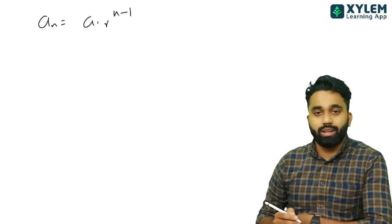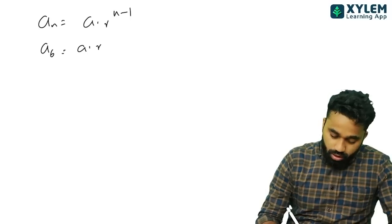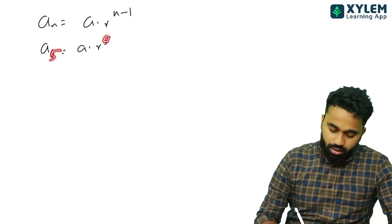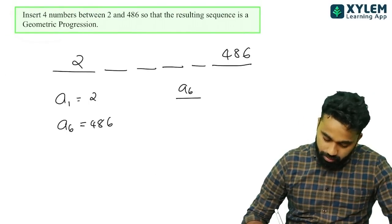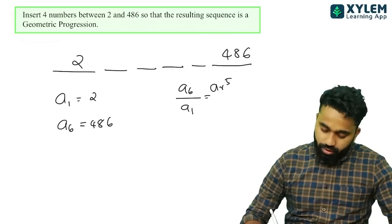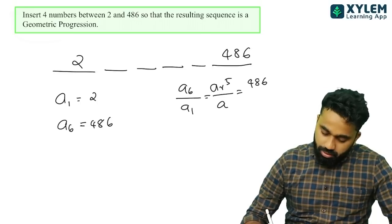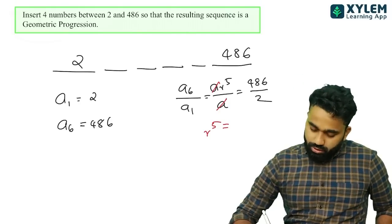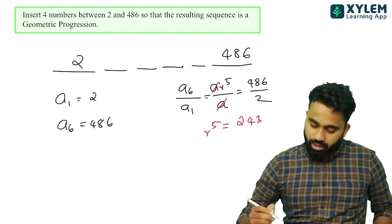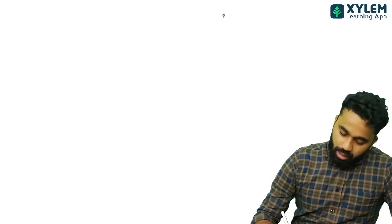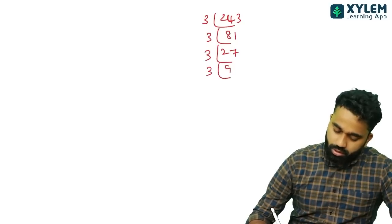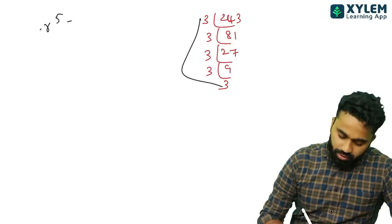We learn a_n equals a into r raised to n-1. Here, a1 is 5, a10 is 5, a5 is 4. A6 divided by A1: A6 is 5, r is 5. This gives 243. Now we have to factorize 243. We get 3 raised to 5 equals 243, so 6 minus 5 equals 1. Therefore r equals 3.